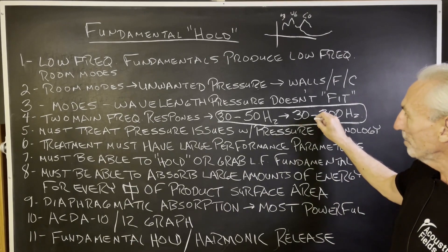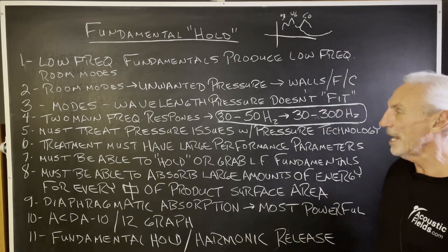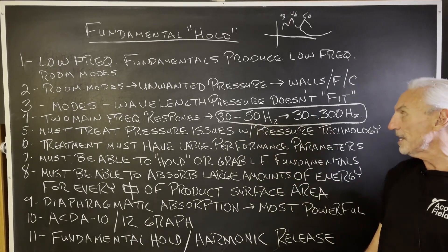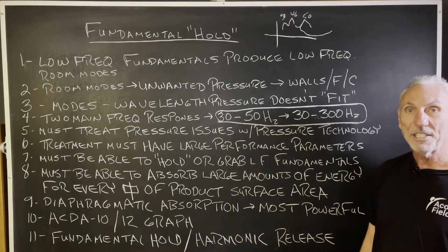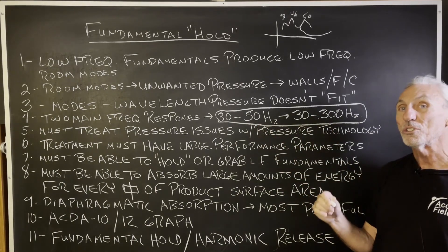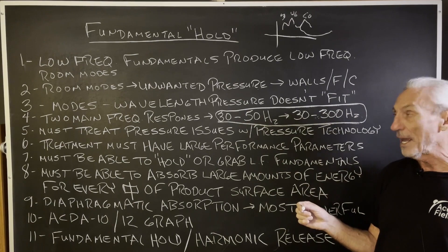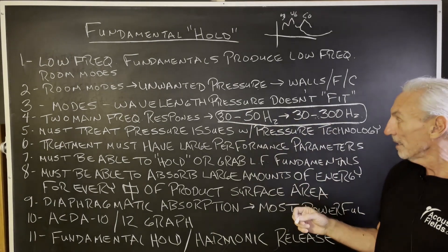This prompted the design for the ACDA 12, which targets 30 to 50 Hz, and the ACDA 10, which is 30 to 300 Hz — more broadband.